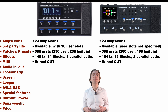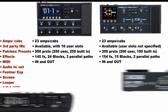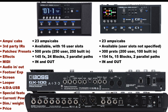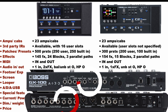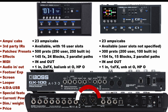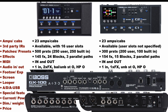Both have the same MIDI ports and capabilities. As regards inputs and outputs, the main difference is that the GT1000 offers a stereo effect loop where the GX100 offers a mono effect loop, and furthermore the GX100 is missing the balanced outputs that are available in the GT1000.